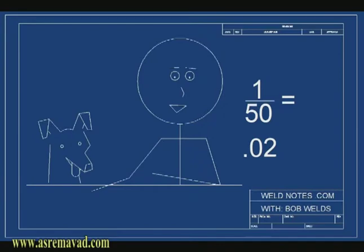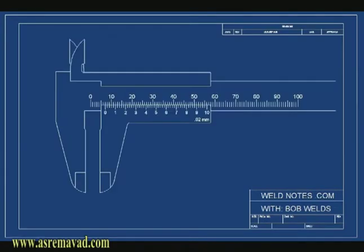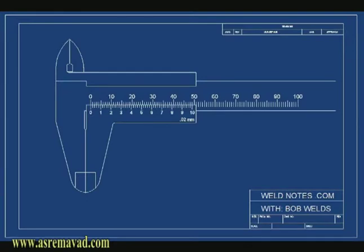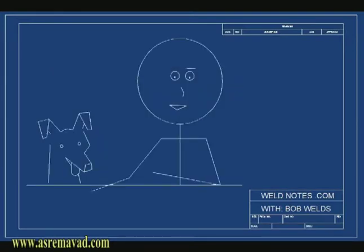See how 1 divided by 50 equals .02? Now, the first thing we're going to measure with our vernier caliper is nothing. That's right, we'll measure zero. It may sound like a silly thing to do, but we're going to do it for a couple of reasons. Let's do it and you'll see what I mean.